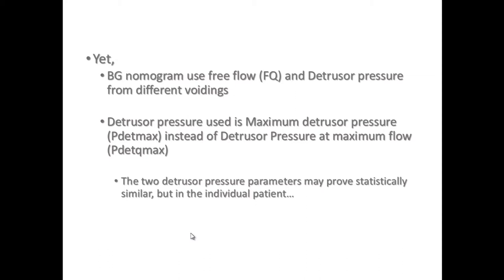Why do I not use the Blaivas-Groutz nomogram? For me, it is a disadvantage to use a free flow from one micturition and the detrusor pressure from a different micturition — we are not relating these two parameters from a single voiding. Also, the Blaivas-Groutz nomogram uses P-det-max, while the Schaefer nomogram uses the detrusor pressure at maximum flow — P-det-Q-max — and I'll show you graphically that these are not the same thing.